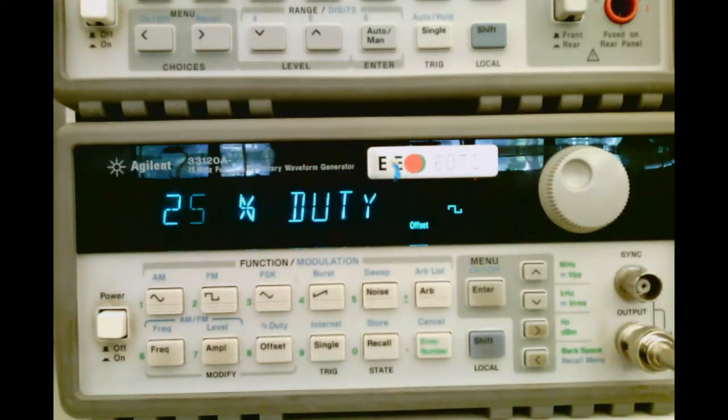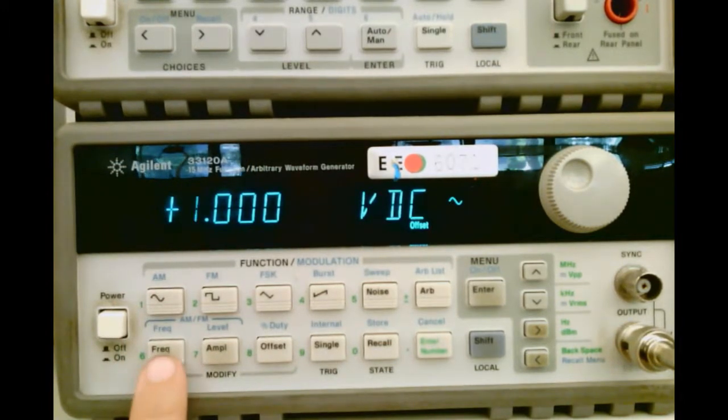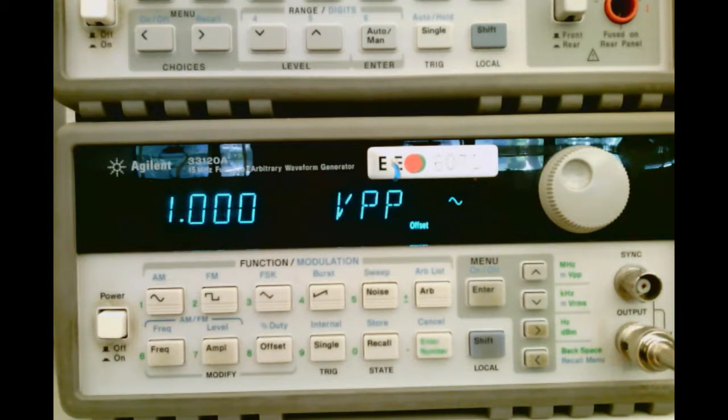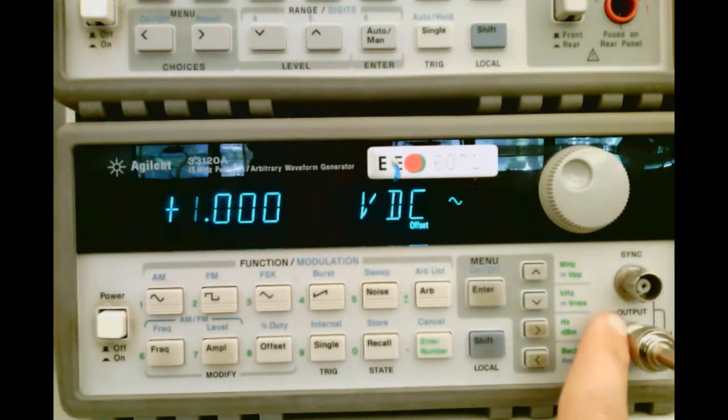So let's now just say we do intend to have a sine wave with a frequency of 3.75 kHz, an amplitude of 1 volt peak-to-peak, and an offset of 1 volt DC. So everything is now set for that, and my output, or this wave, will be coming out of this BNC port under the word output, not the sync one.